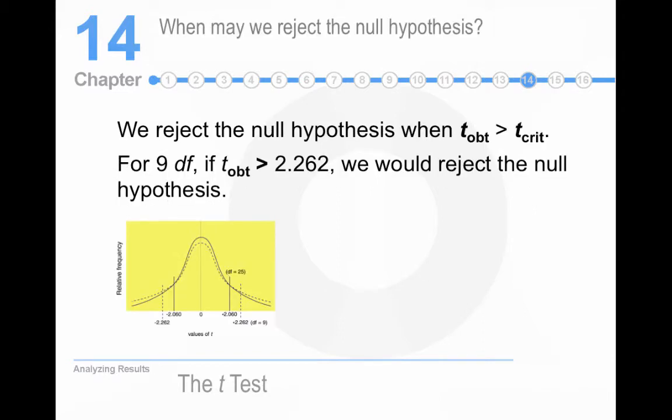When can we reject the null hypothesis? Well, like the chi-square test, when our t-obtained is greater or equal to our t-critical, we reject the null hypothesis. And conversely, when our t-obtained is less than our t-critical, we fail to reject the null hypothesis.